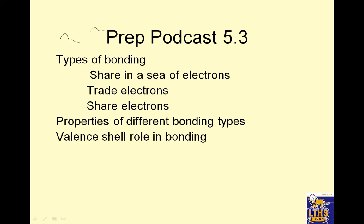Hi everybody, this is Mr. Folley, and welcome to podcast 5.3. We're going to talk about types of bonding — the electrons shared in a sea of electrons, trading and sharing electrons. We're going to talk about the properties of different bonding types and the valence shell role in binding. So let's go ahead and get started.